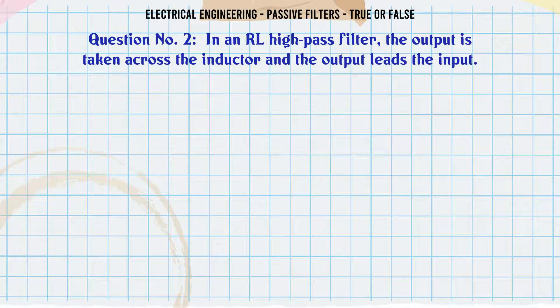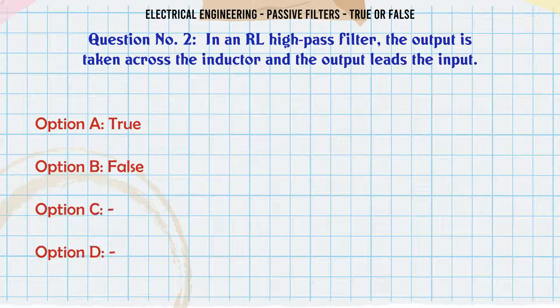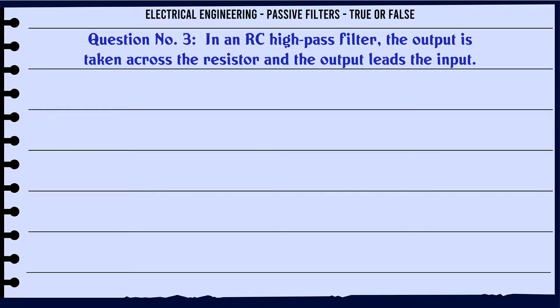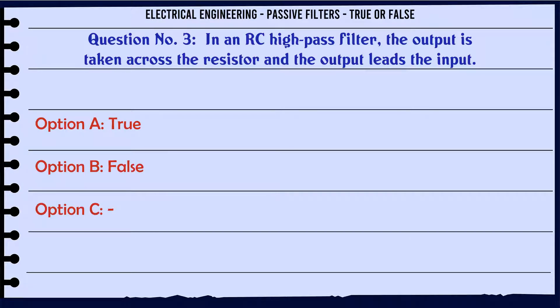In an RL high-pass filter, the output is taken across the inductor and the output leads the input. A. True. B. False. The correct answer is: True.